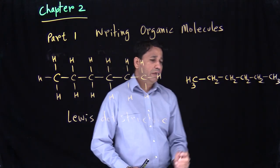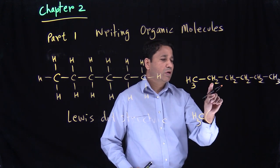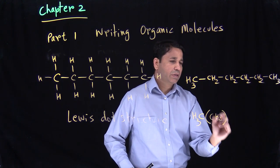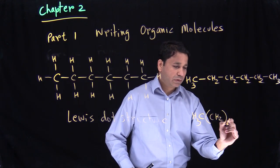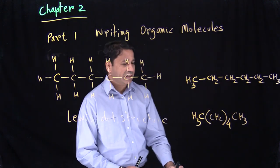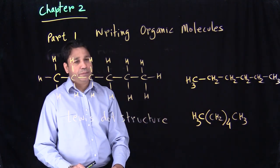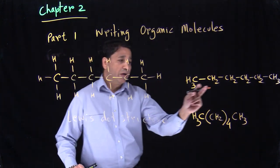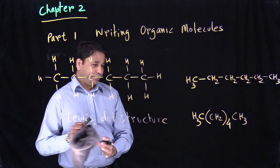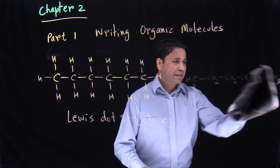Another way could be writing a CH3, and in parenthesis, write down as many CH2 groups as we have — we have CH2 four times — and then a CH3. So another way could be writing it like that. Now the problem with writing all these structures is the time, and there's a likelihood that you might make a mistake. So the best way would be writing a very simple structure, like this.